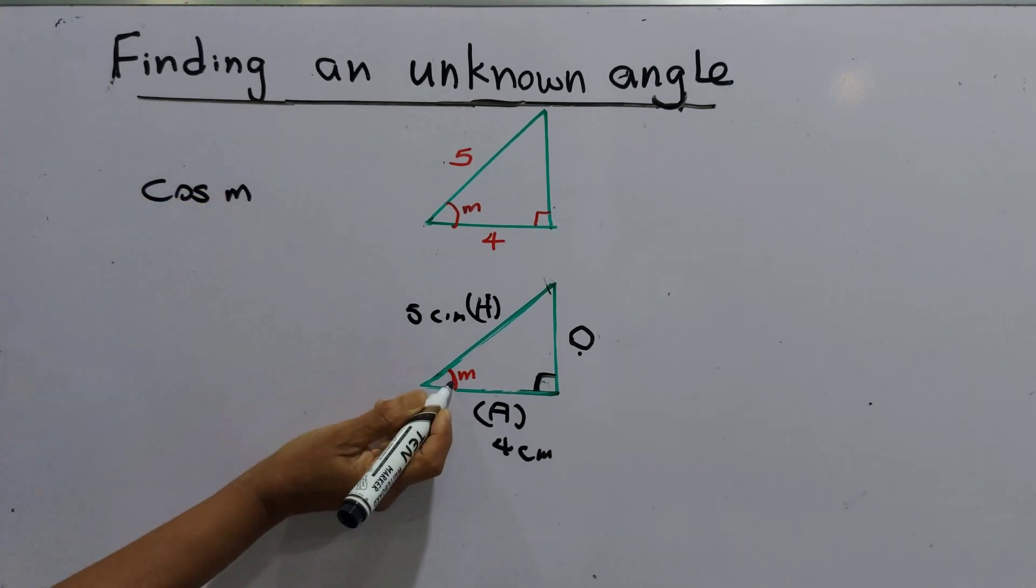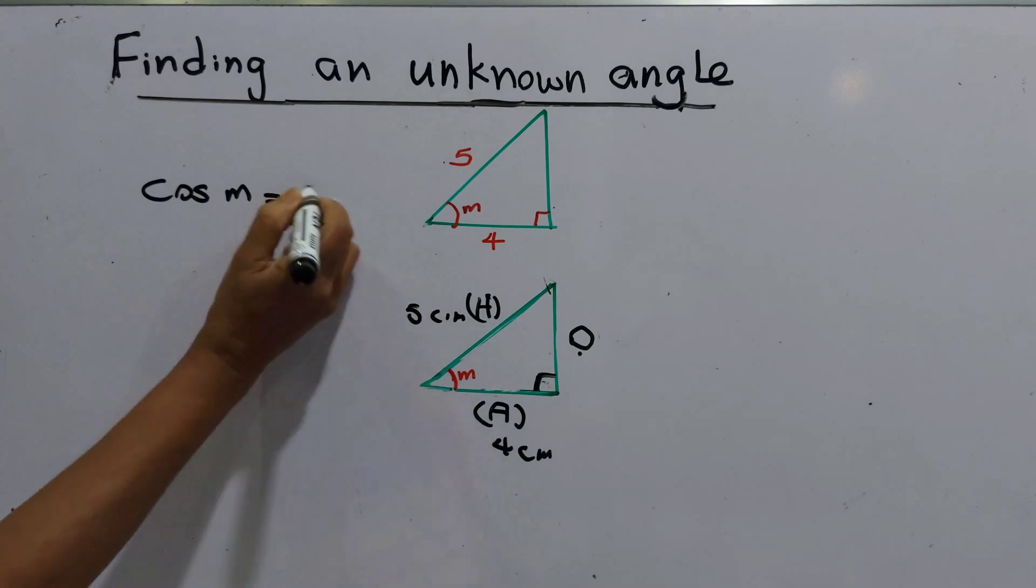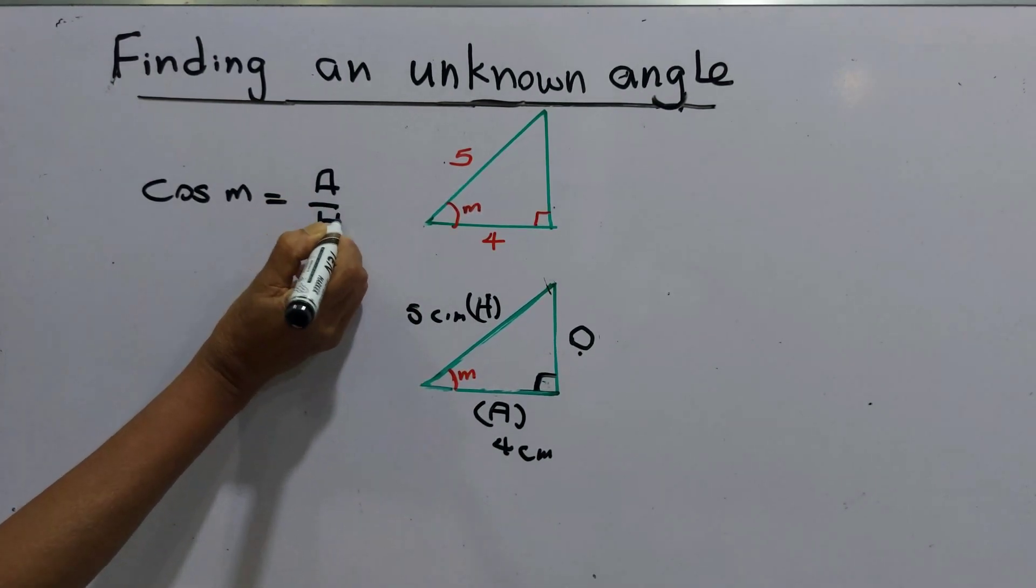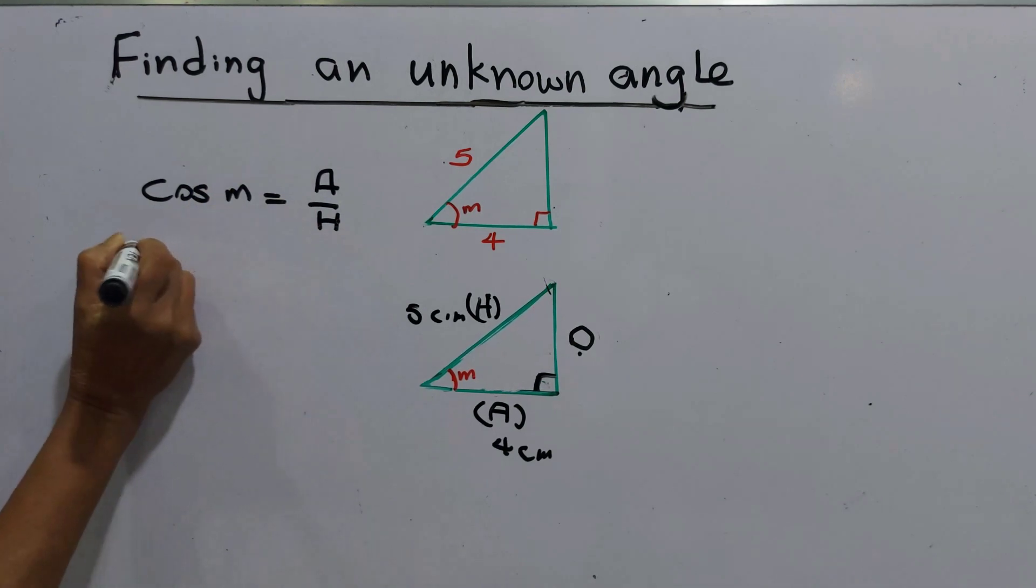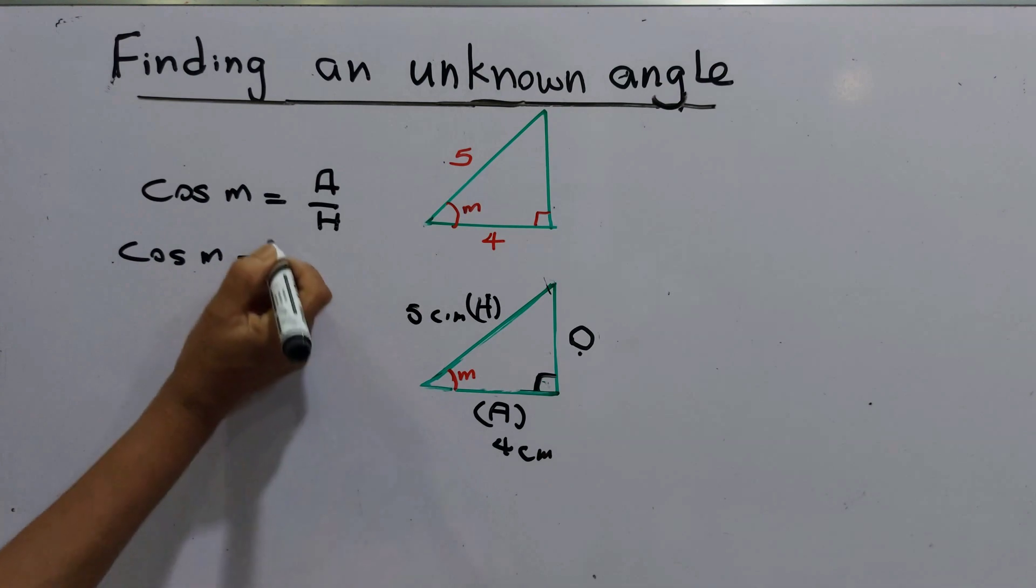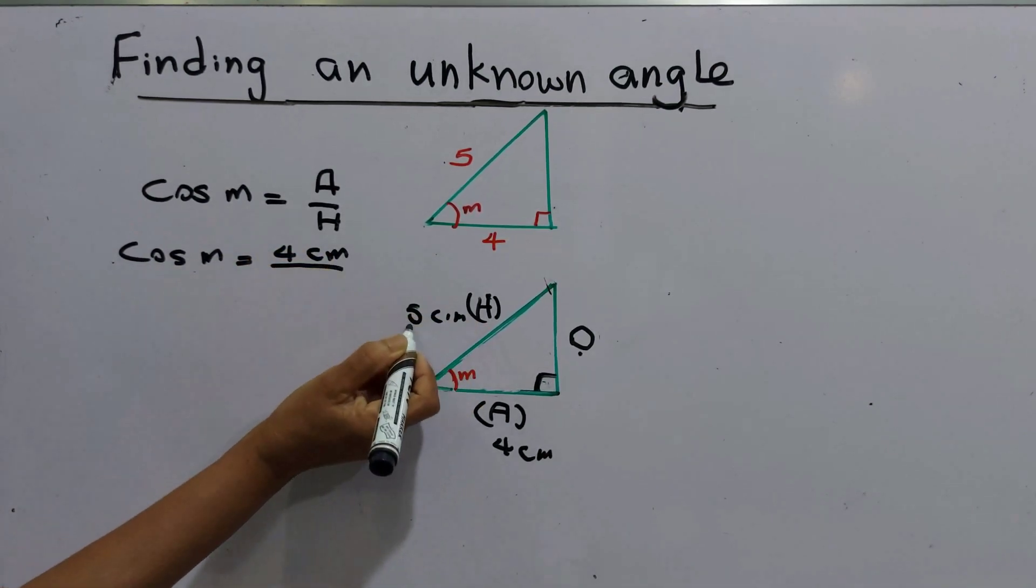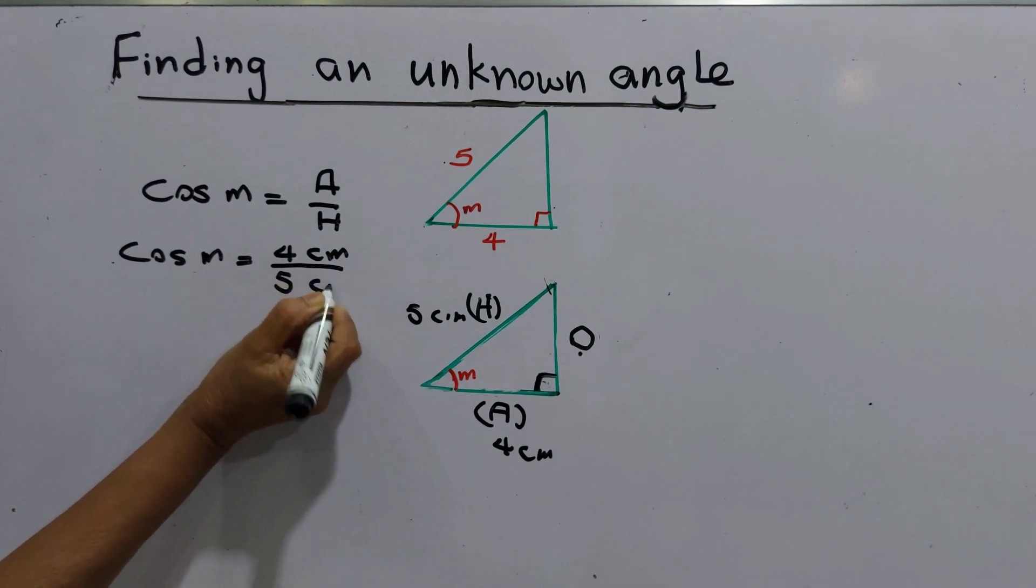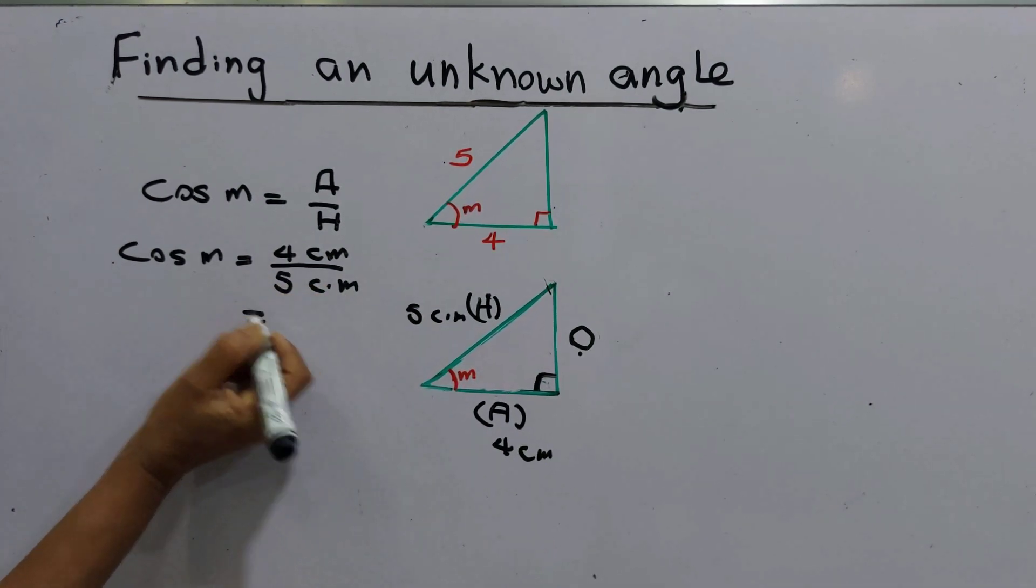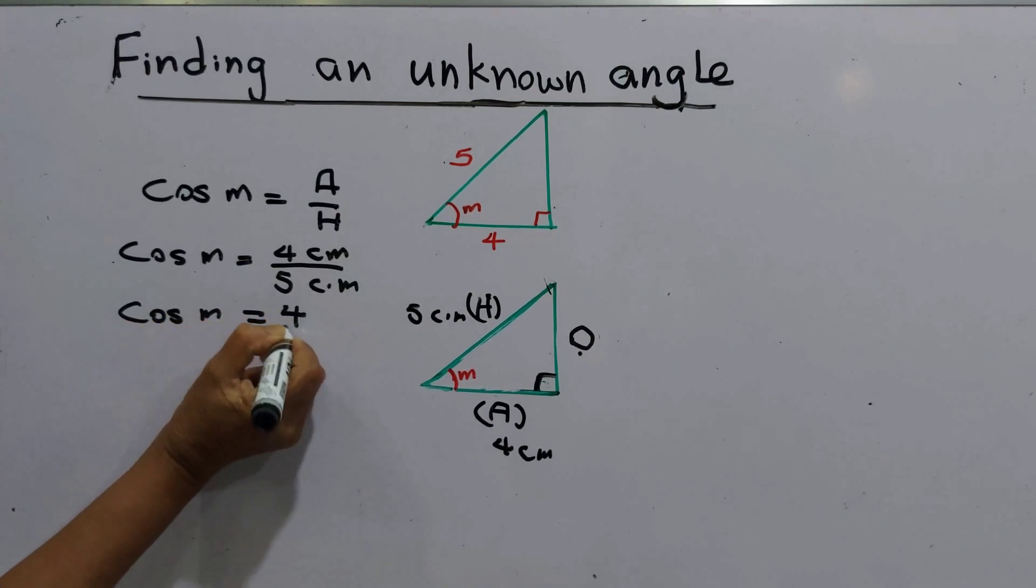Cos M, angle is M equals adjacent over hypotenuse. Then cos M equals adjacent value is given as four centimeters and hypotenuse that is given as five centimeters. Then cos M equals four over five.